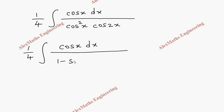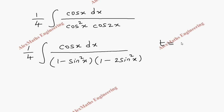Now we change the denominator in terms of sin so we can do substitution. cos²(x) becomes (1 - sin²(x)), and cos(2x) becomes (1 - 2·sin²(x)). We take t = sin(x), so dt = cos(x) dx.